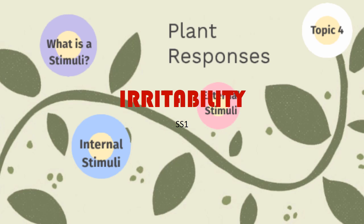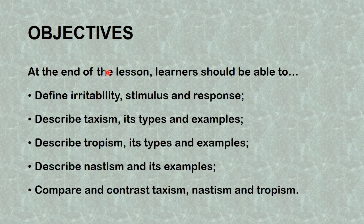Hello there, you are welcome to another biology lesson. Today we'll be looking at the topic irritability. The objectives for this lesson are to help learners define irritability, stimulus, and response; describe taxism, its types and examples; describe tropism, its types and examples; describe nastic movement and its examples; and compare and contrast taxism, nastic movement, and tropism.